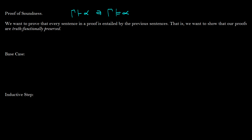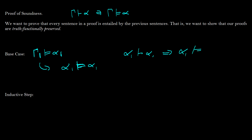Base case: we're going to show that gamma proves some alpha — this should be a 1, not an i — which means the first line entails the first sentence. If we have alpha_1, we can prove alpha_1. We can just say somewhere in gamma_1 is alpha_1, and alpha_1 always entails itself since everything entails itself. So we can say if alpha_1 proves alpha_1, then alpha_1 entails alpha_1.